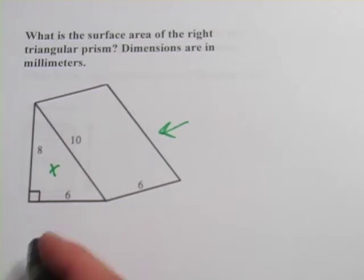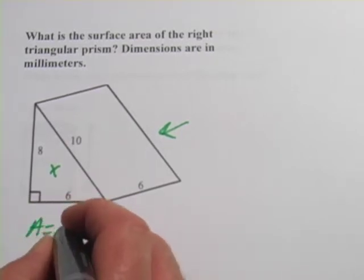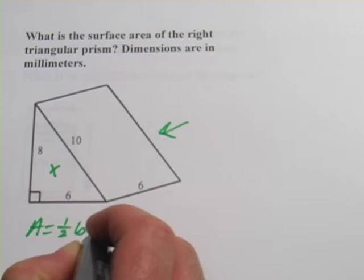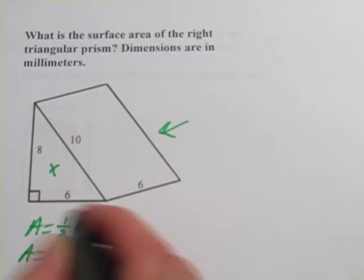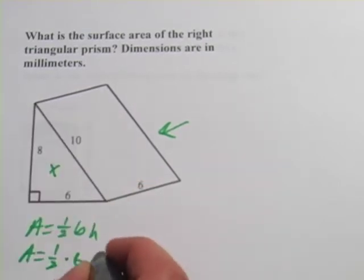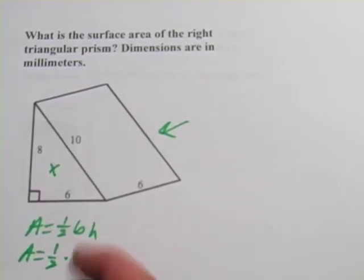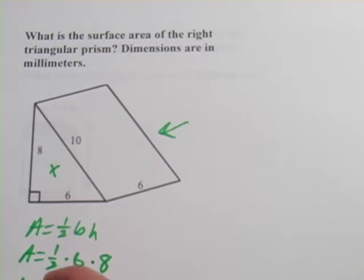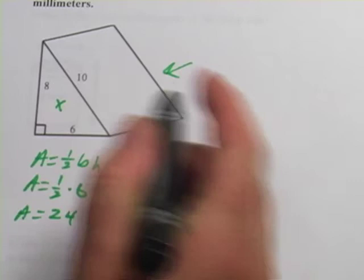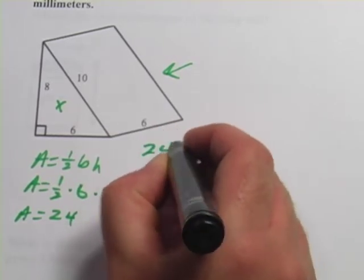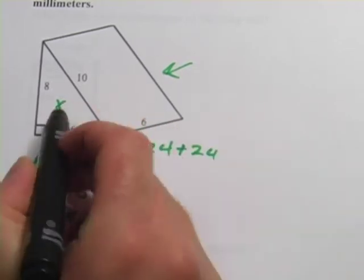And to figure out the area of a triangle, of course, its area equals 1 half base times height. This is a right triangle, so our base, it looks like, is 6, and our height is 8. And let's see, that's going to be 24. 24. But there are two of those. So we'll start here, 24 plus 24. Now we've got those two sides.